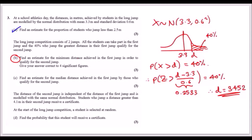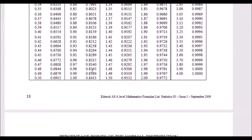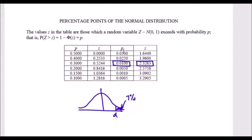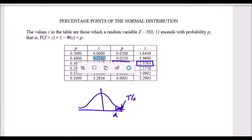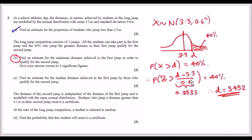The small table records greater-than probabilities. With p = 0.40, the Z value is 0.2533. Substituting: (d − 3.3) / 0.6 = 0.2533, so d = 0.2533 × 0.6 + 3.3 = 3.452. That is the minimum distance needed to qualify for the second jump.